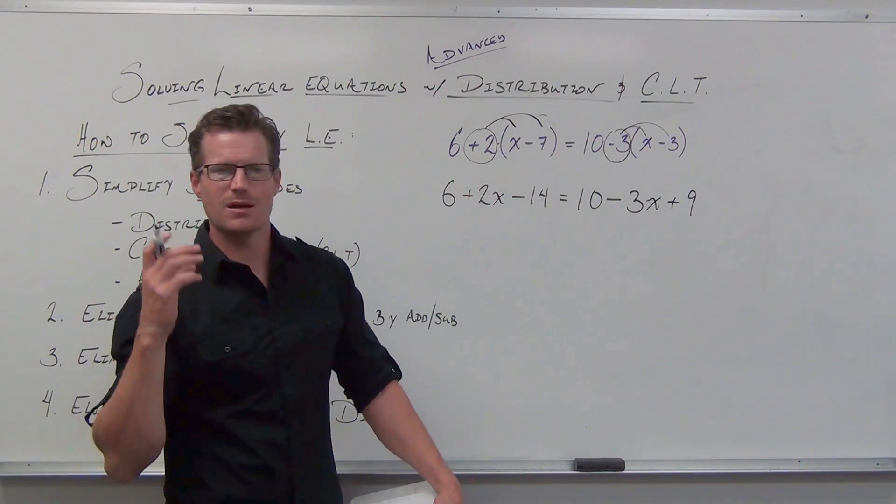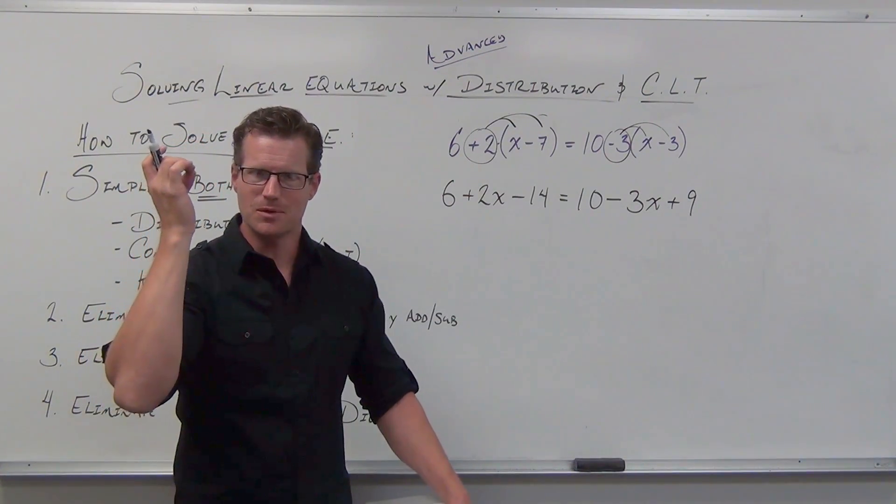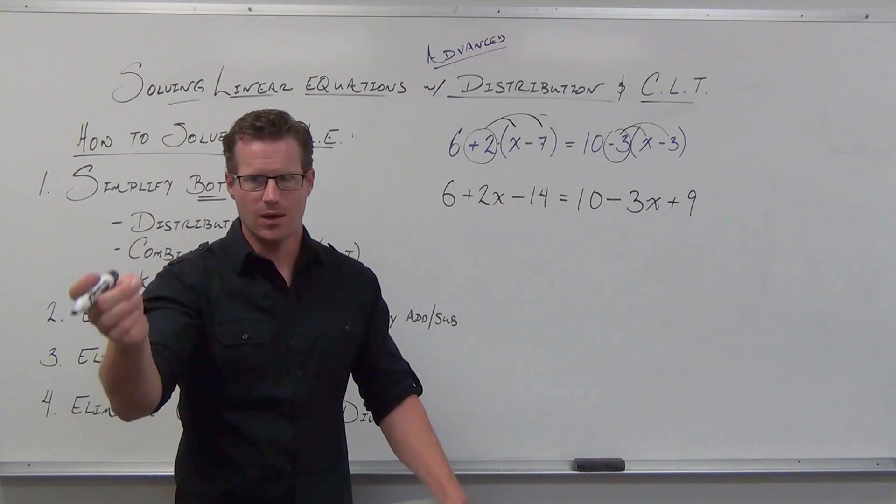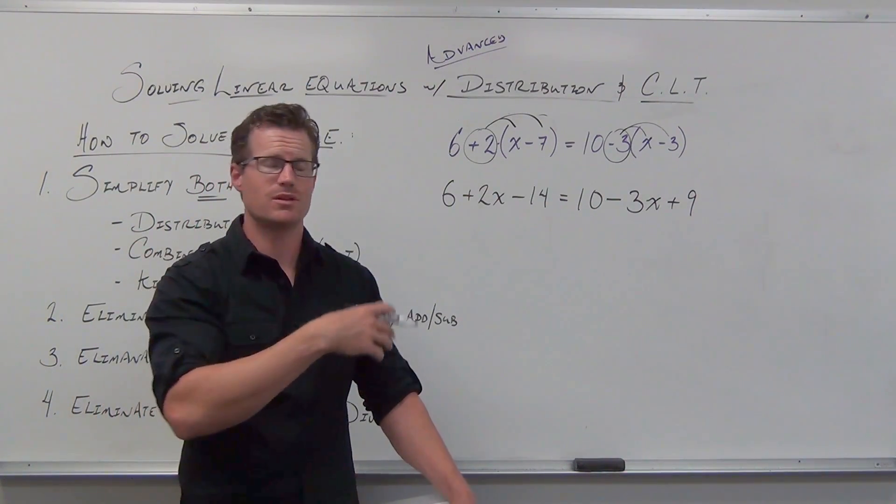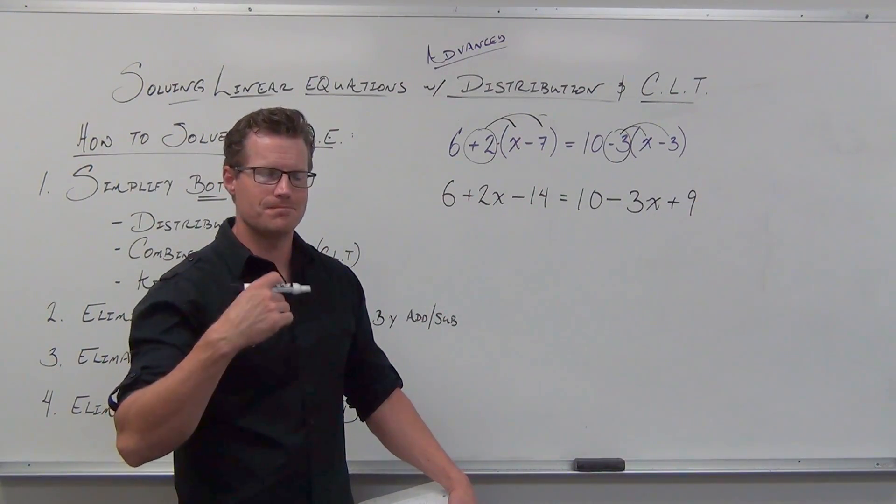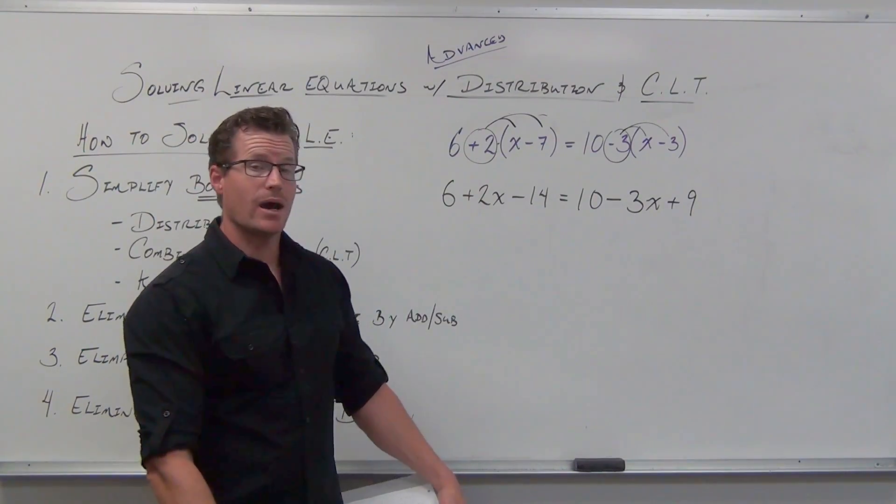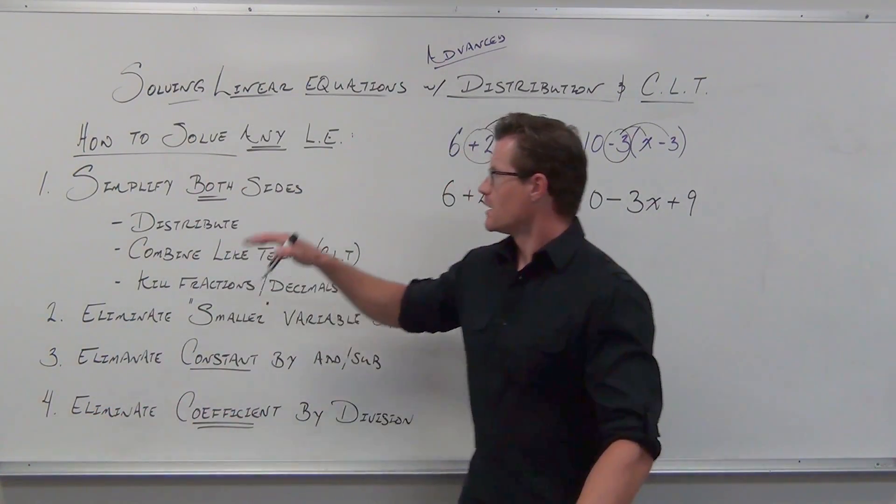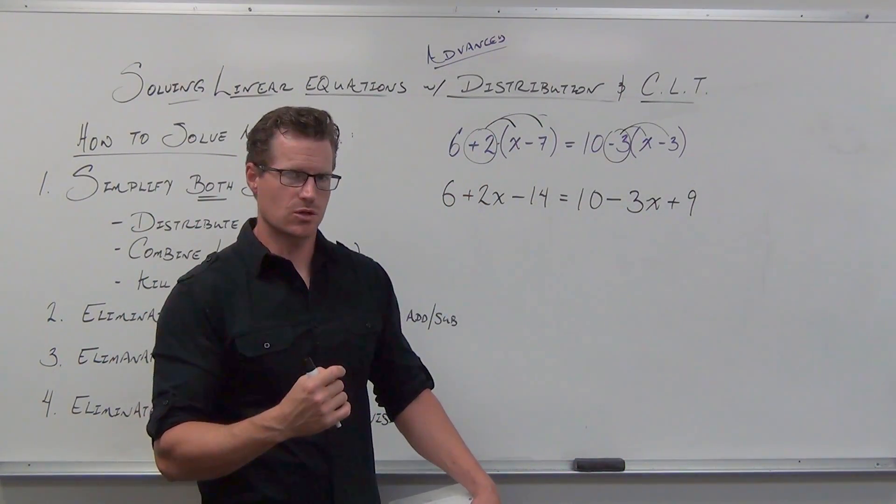When we distribute negative three, you'll notice how when I'm saying that, I'm always saying negative and positive. It's the way that my brain is kind of thinking through the rules of multiplication. If I say the signs, I'm more apt to multiply correctly, to not mess up my signs. So I say negative three times x is negative three x. I write minus three x. Negative three times negative three gives me positive nine. If I say positive nine, I write down plus nine.